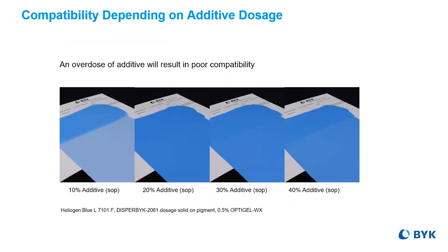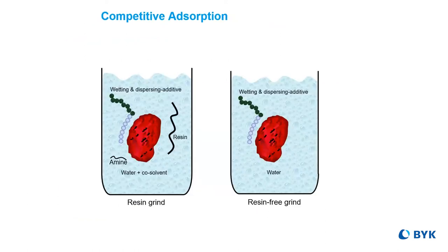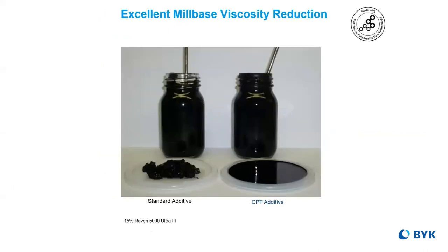Other key factors to consider include how much additive to use. I discussed reviewing a ladder study in the polyurethane module, so take a look at that to get a deeper dive there. Determining order of addition or the type of grind process is imperative, because that's also going to determine which type of additive you should use. There are some additives that work very well in resin-containing systems and others that do not. Because at the end of the day, pigment affinity and system compatibility are the key elements to choosing the correct wetting and dispersing additive for optimal results.